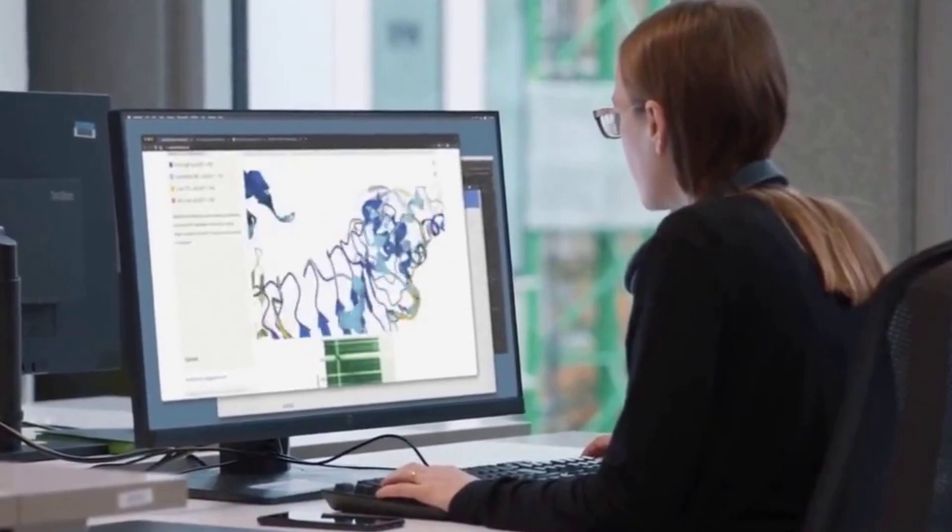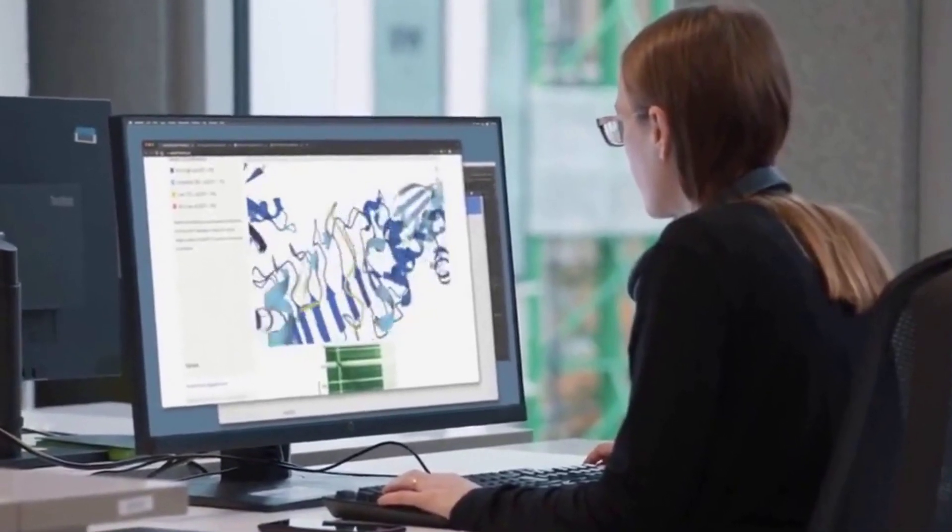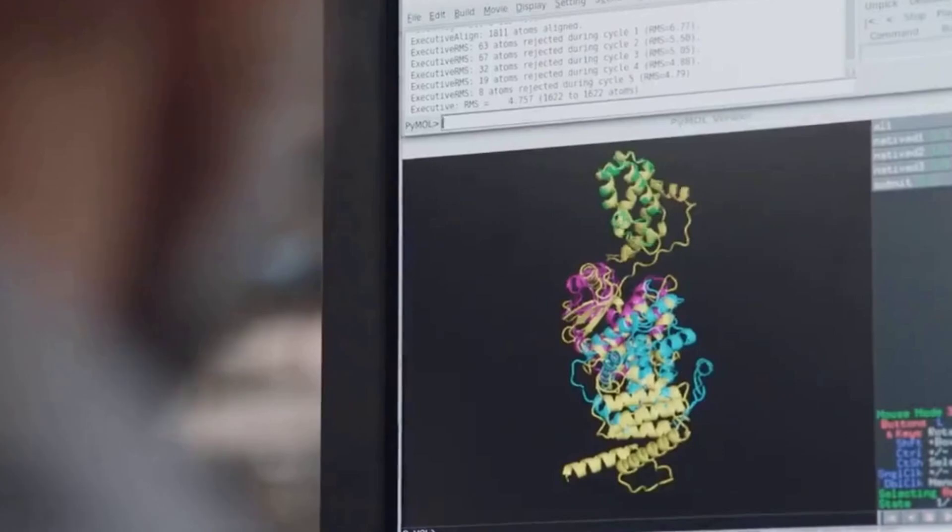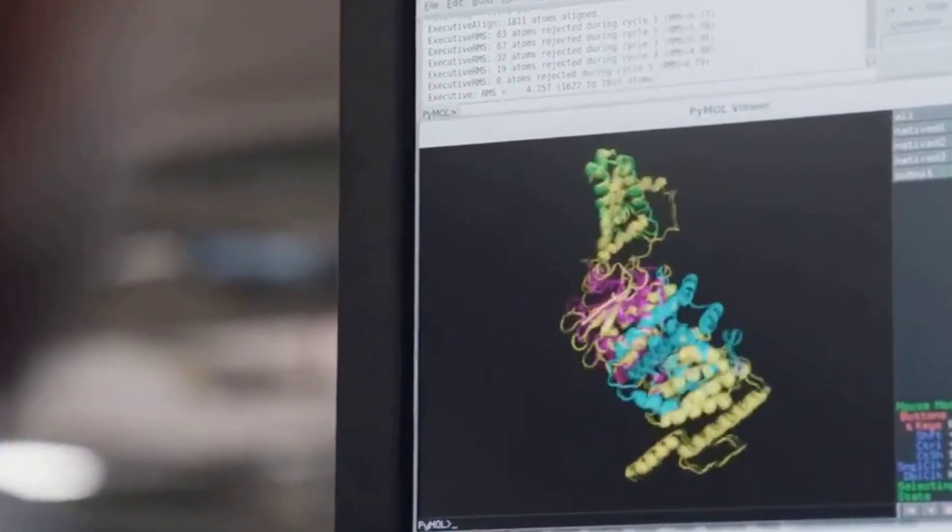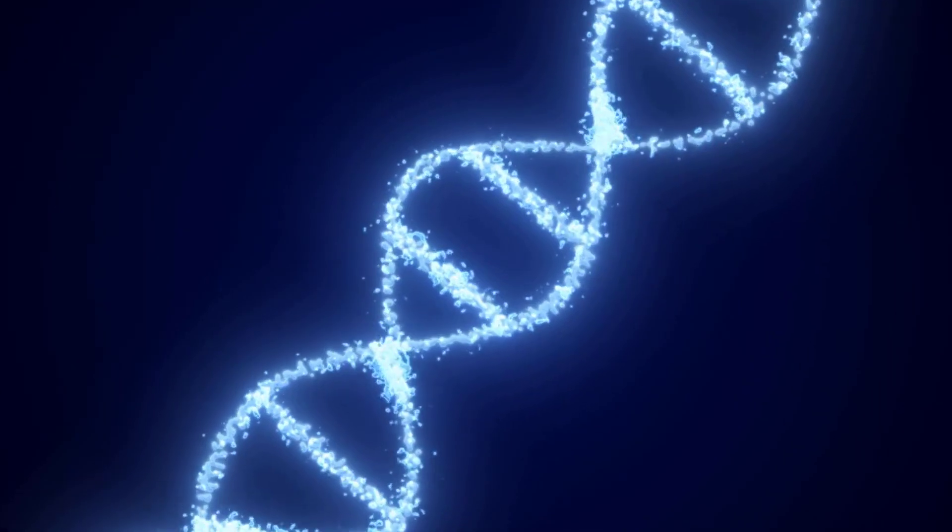Forget Rosetta. AlphaFold 2 achieved a median GDT-TS score of 92.4 on CASP 14. In over two-thirds of test cases, AlphaFold's predictions were indistinguishable from results obtained through X-ray crystallography. This wasn't incremental progress. It was a generational leap.